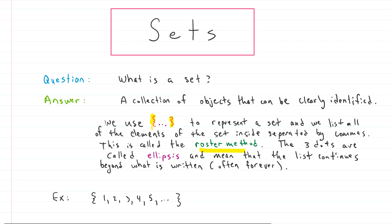And the three dots that you often see, for example down here, that's called an ellipsis. And that means that the list contains values beyond what is written, and it continues sometimes forever.